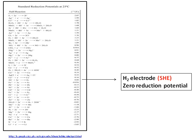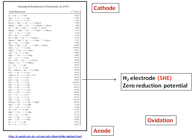For a reaction to be spontaneous, remember that the value of E has to be positive. All the ions at the bottom, because they have a negative reduction potential, they will prefer to react in the reverse way — in other words, they will prefer to get oxidized and therefore act as an anode. At the top, they will prefer to act as cathode.